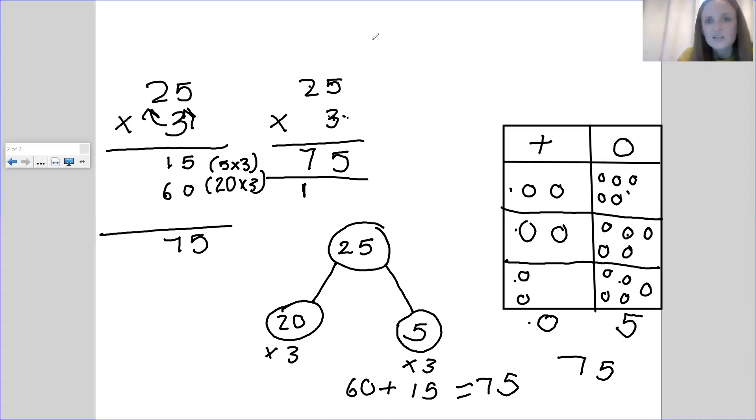And the one that I haven't actually put on here, let me just see if I can move this. There we go, is the number line one. So I'm going to draw a number line here. And the idea is that you start at zero. I'm going to use a different color so we can see this. I'm going to start at zero. I'm going to break my number up because I know that 25 is the same as 10, 10 and 5. And I'm going to times each one of those numbers by three.